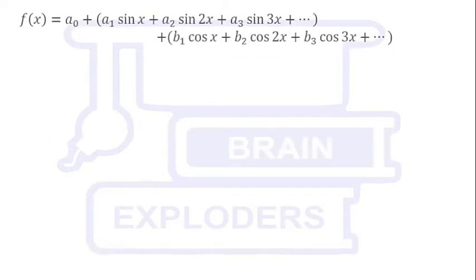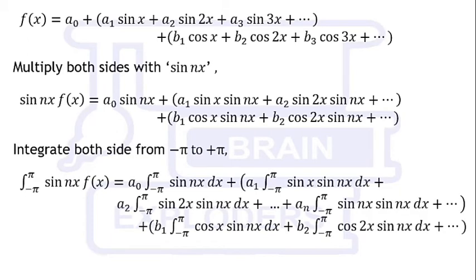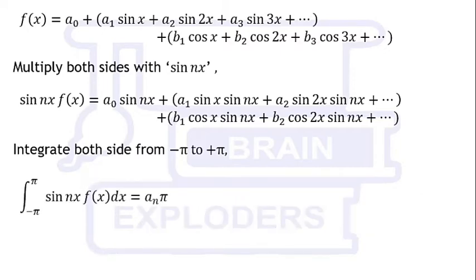Now multiply that initial expression both sides with sin(nx) and again integrate in the same interval. According to the properties of these integrals, all the terms become 0 except the terms having sin(nx) times sin(nx). From here we get the value of aₙ = 1/π times integration from -π to +π of sin(nx)f(x)dx.